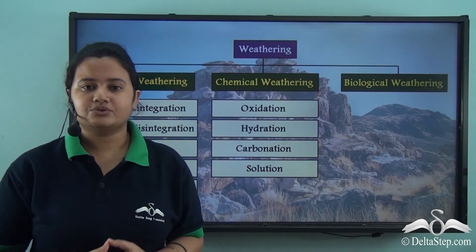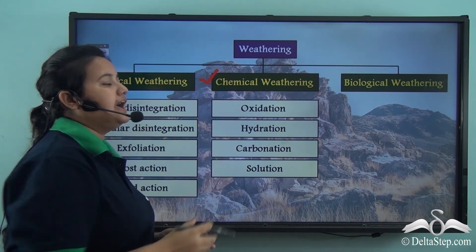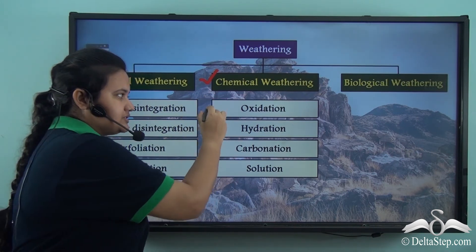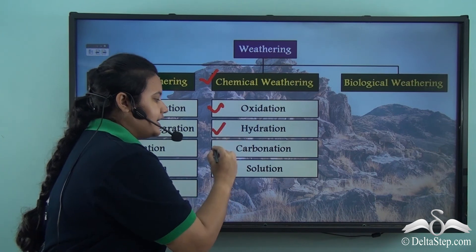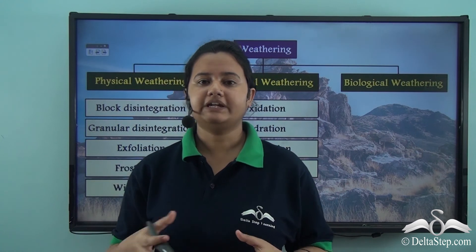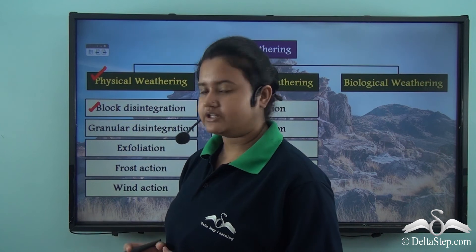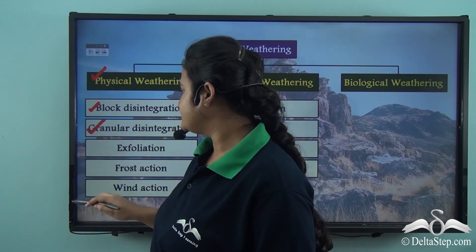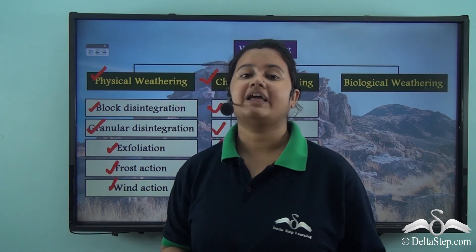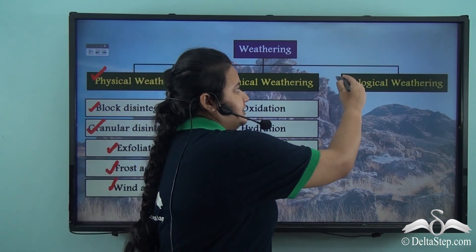In today's video we understood the meaning of chemical weathering and discussed its different types: oxidation, hydration, carbonation, and solution. In the previous video, physical weathering and its types were discussed — block disintegration, granular disintegration, exfoliation, frost action, and wind action. In the next video, biological weathering will be discussed in detail.